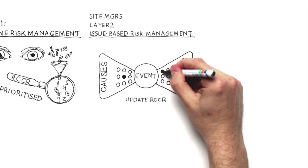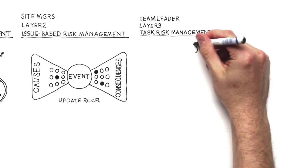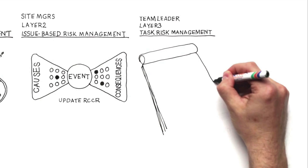For layer three, task risk management, we use job risk analysis. What's so special about layer three? It allows you to manage the risks associated with particular task actions or activities. Use information from layer one to prioritize which tasks to focus on and the controls from layer two to help define the particular controls to be implemented.